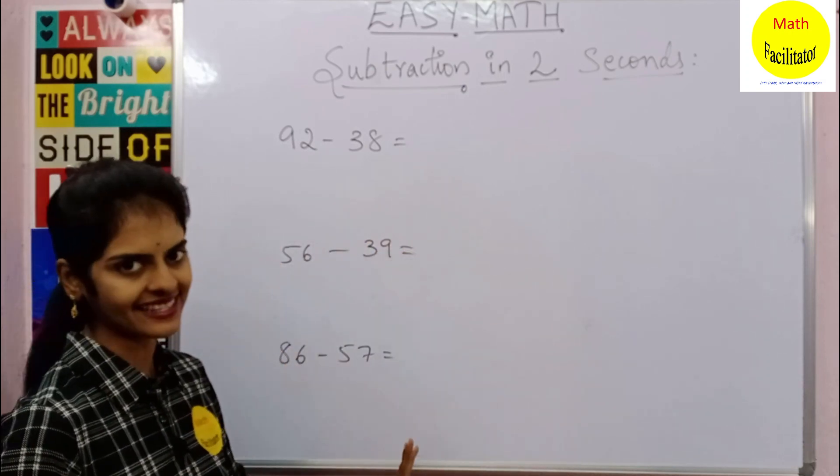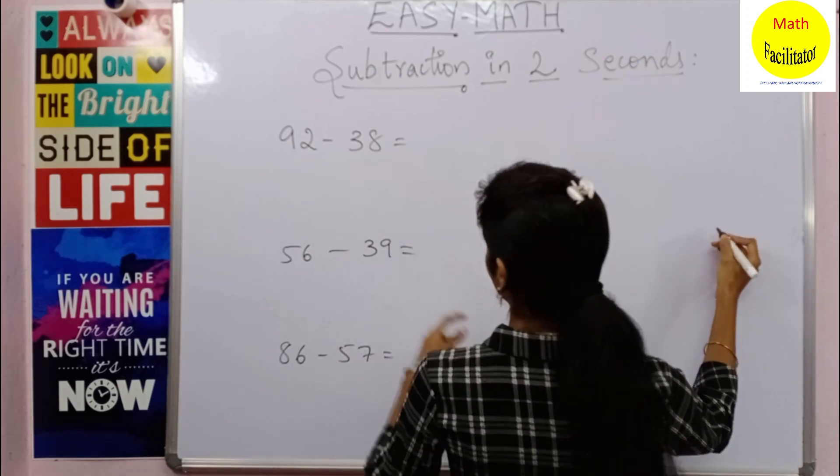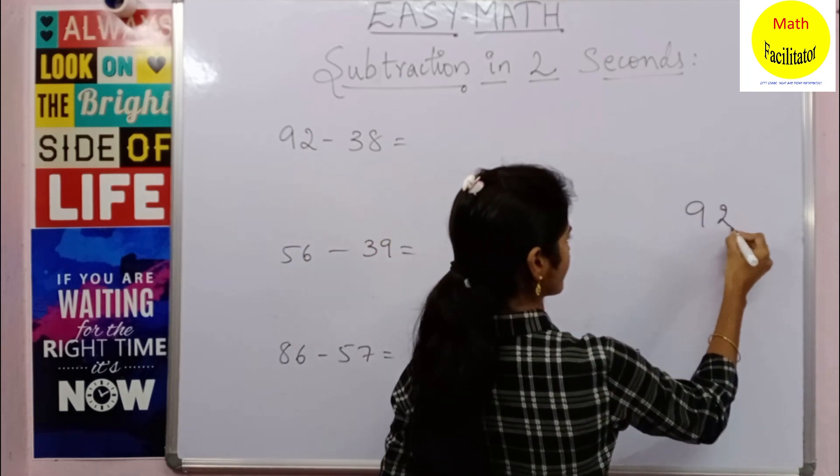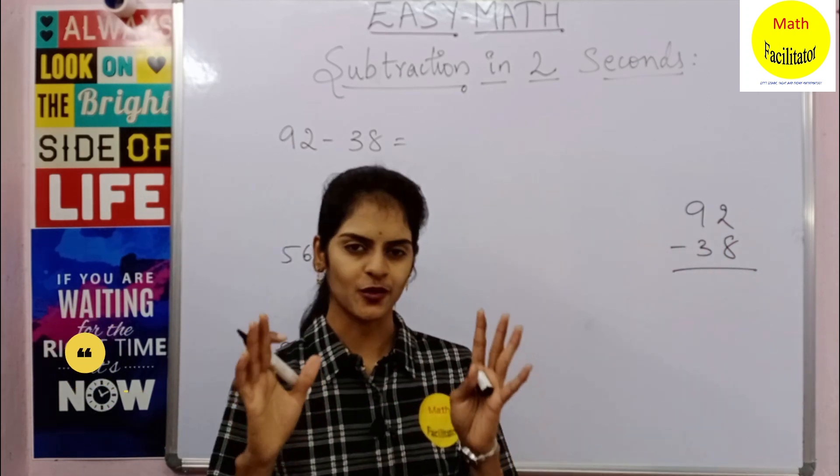You might have subtracted in the traditional way, like suppose if 92 minus 38, you might have borrowed and then got the answer. So no more steps, let us quickly do this.